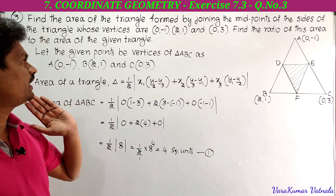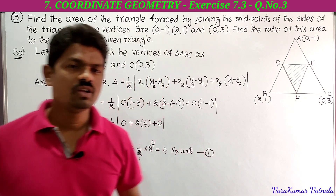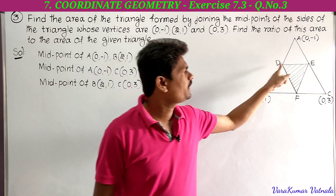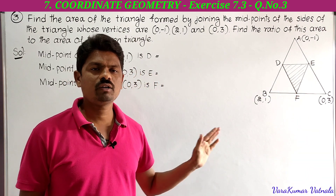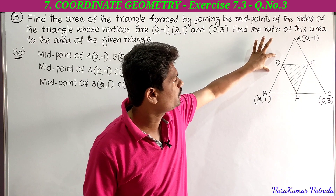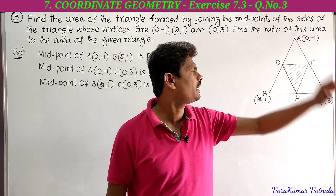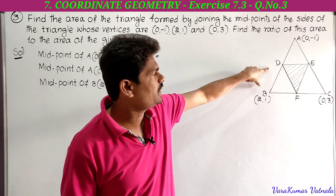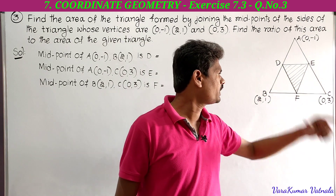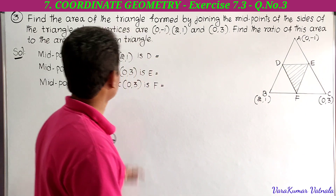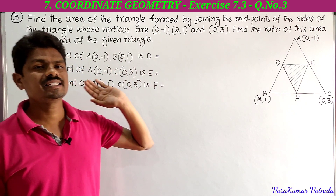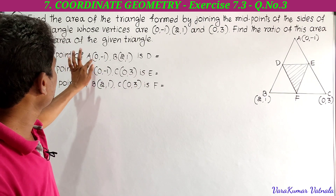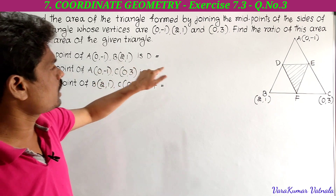Next, we need to find the area of triangle DEF. Before that, we must find the midpoints of AB, BC, and AC. The midpoint of AB is D, midpoint of AC is E, and midpoint of BC is F. The midpoint formula is: x1 plus x2 by 2, comma y1 plus y2 by 2. We start with midpoint of A(0, -1) and B(2, 1).